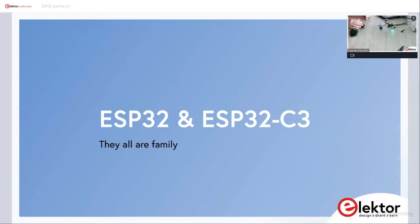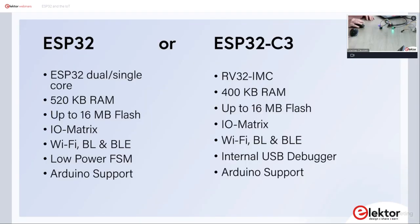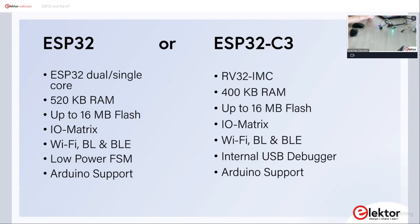Let's start with the ESP32 and ESP32 C3 — they are all family. The ESP32 is a dual-core MCU with 520K of BRAM, up to 16 megabytes of flash, and an IO matrix so you can have any function on any pin. It comes with Wi-Fi, Bluetooth Classic, Bluetooth Low Energy, has a low-power finite state machine, and other peripheral support.